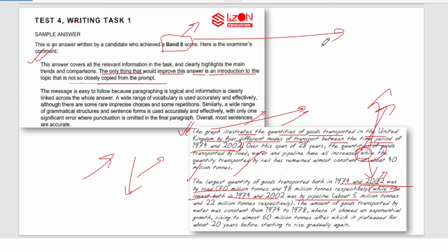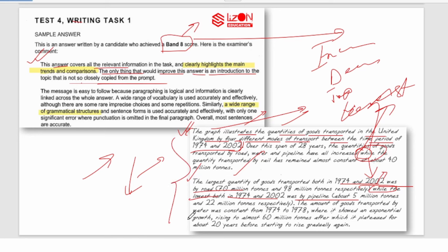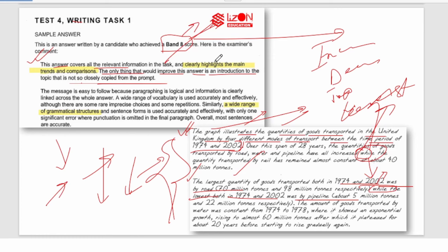In the overall, the student wrote about the increase — road, water, and pipeline all increased — while rail remained constant. Then he mentioned the largest quantity was transported by road. The examiner said this answer 'covers all the relevant information and clearly highlights the main trends and comparisons.' They also praised the wide range of grammatical structures. But we've taught you better structure than this — so you should get at least this level, if not more.